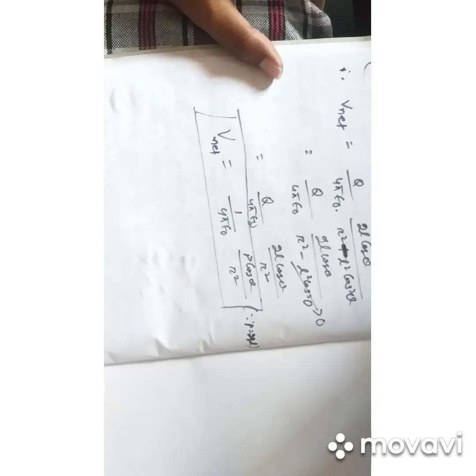To summarize: the electric potential at the axial line is (1/4πε₀)(P/R²); along the equatorial line it is zero; and at any general point it is (1/4πε₀)(P cos θ/R²). If someone asks about the electric potential at the equatorial line, the answer is zero — though electric field intensity does exist there. Only along the equatorial line is the electric potential zero at every point. Thank you.